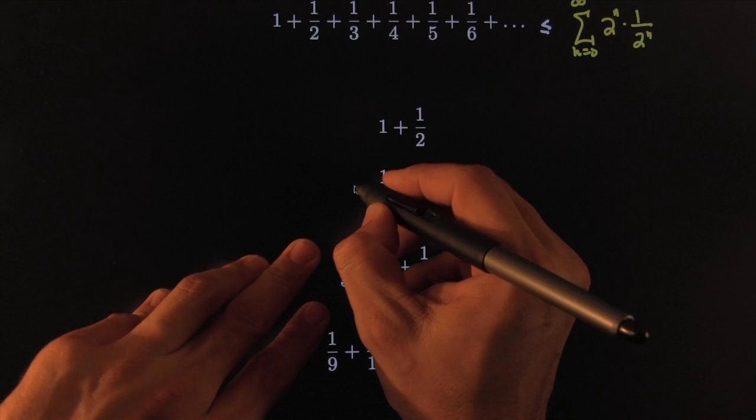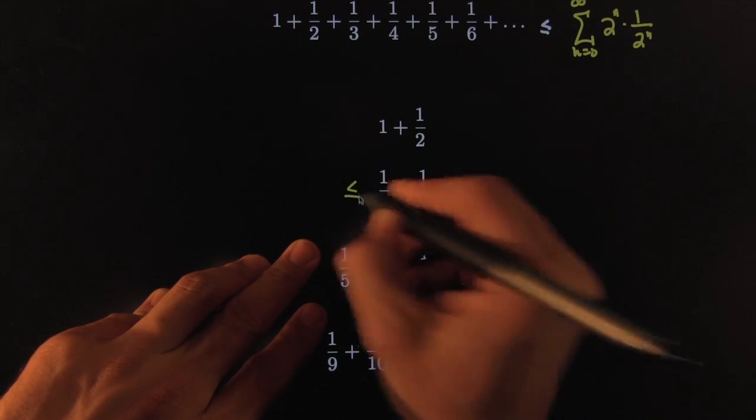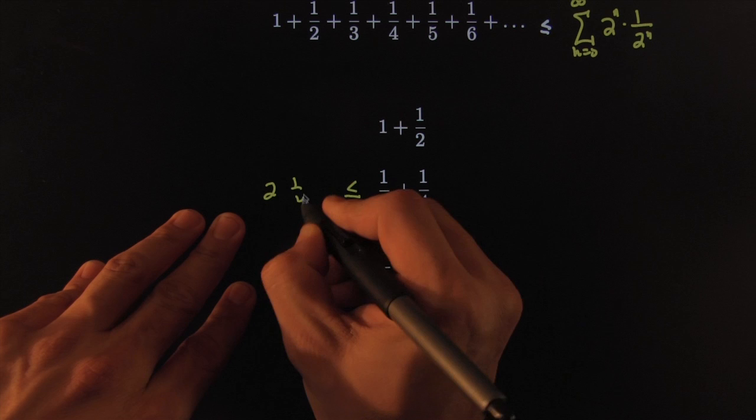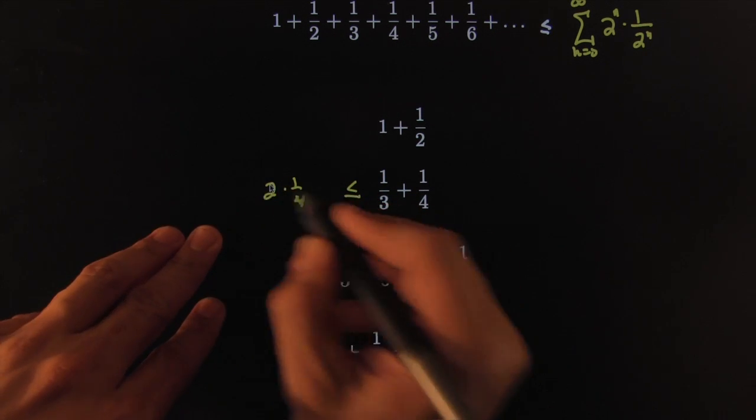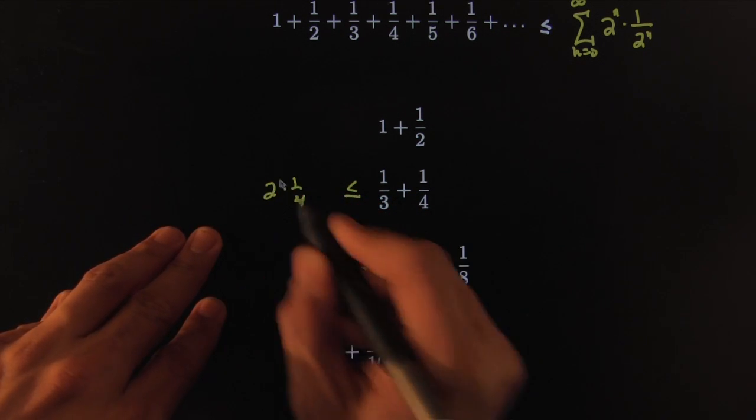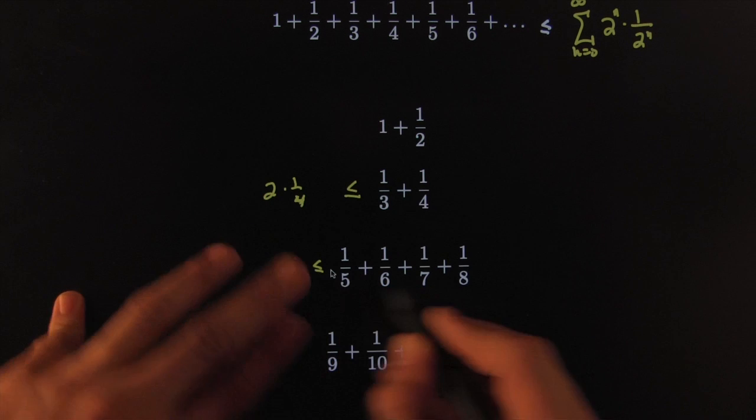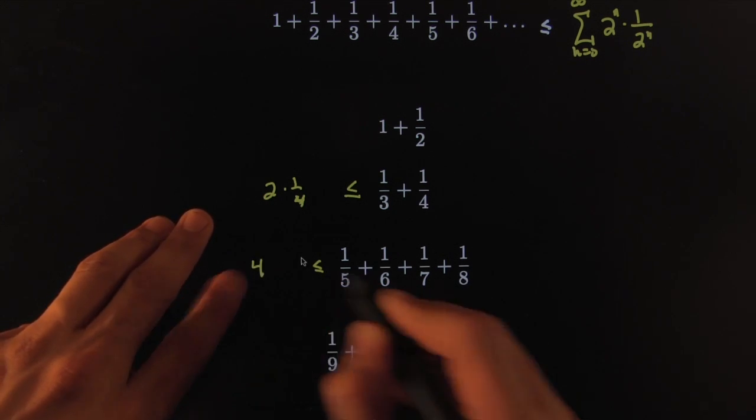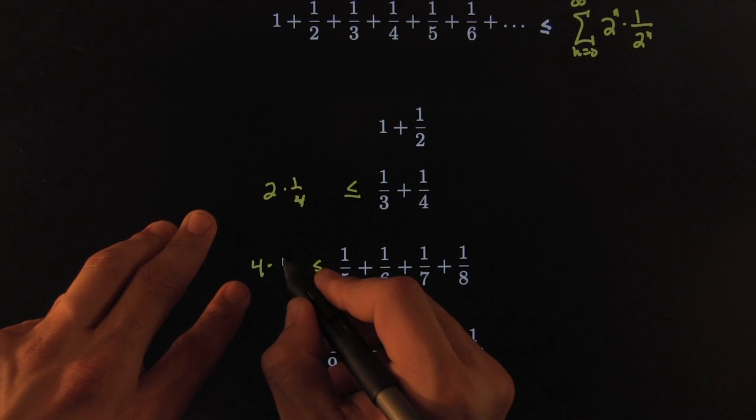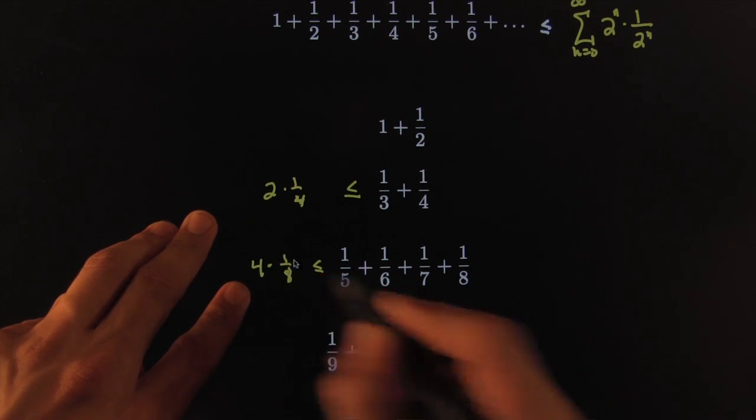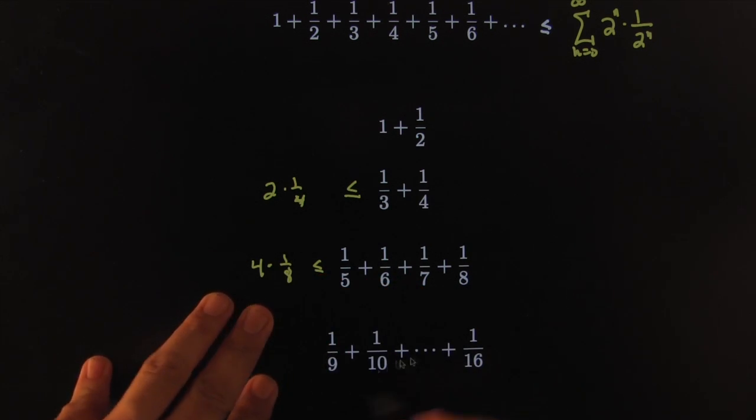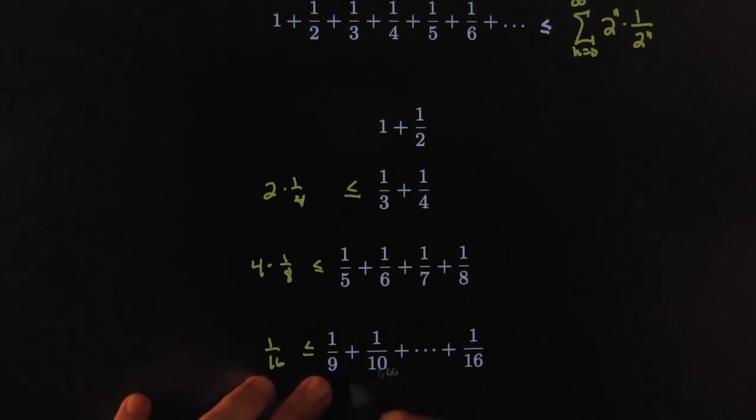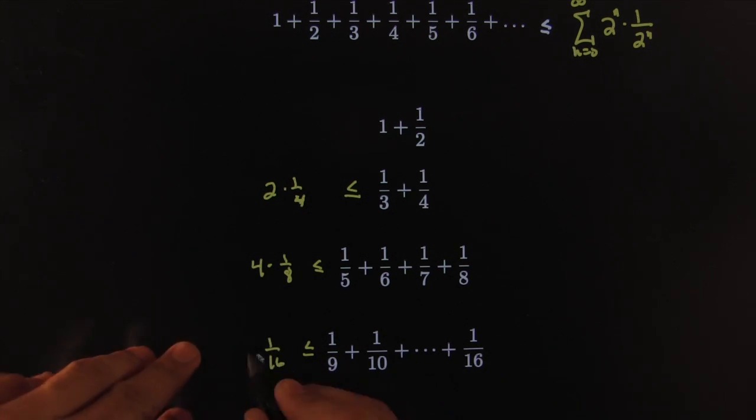So you can say that this guy is smaller than or equal to 2 times 1 fourth, or smaller than or equal to... we'll come back to the pattern in just a second. Again, these are all smaller than 1 eighth, so I could say I've got 4, and these are all bigger than the smallest one, which is 1 eighth, 4 times, and so on.